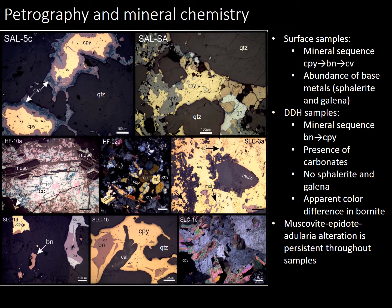Petrography and mineral chemistry revealed major differences between the surface and diamond drill hole samples. Specifically, at the surface, the mineral sequence is bornite rimming chalcopyrite, and cobaltite rimming bornite. There is an abundance of base metal minerals like sphalerite, galena, idaite, spionkopite, and yarrowite. However, in the diamond drill hole samples, the mineral sequence is the opposite — chalcopyrite is rimming bornite. There is an abundance of carbonates, but no sphalerite and galena. There is also an apparent color difference in bornite in the core samples. It is important to note that muscovite, epidote, and adularia alteration is persistent throughout the samples.